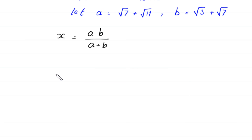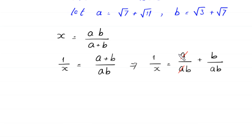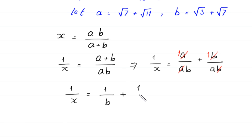Now we take the reciprocal on both sides: 1 over x equals a plus b divided by a times b. This gives 1 over x equals a over ab plus b over ab, so a cancels in the first term and b cancels in the second term, giving 1 over x equals 1 over b plus 1 over a.